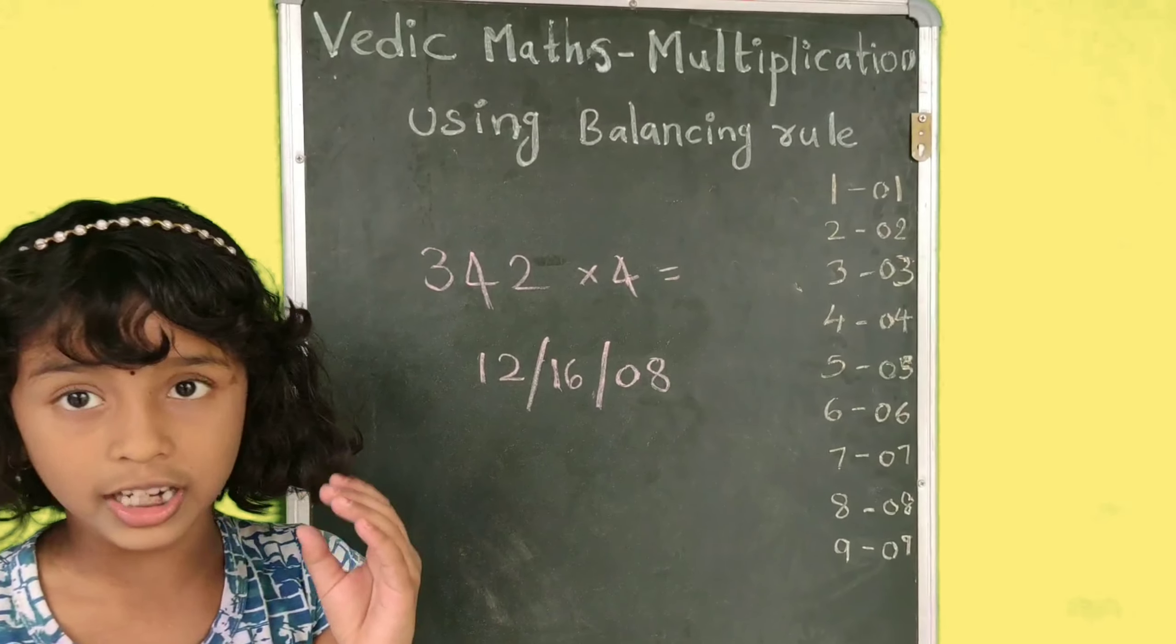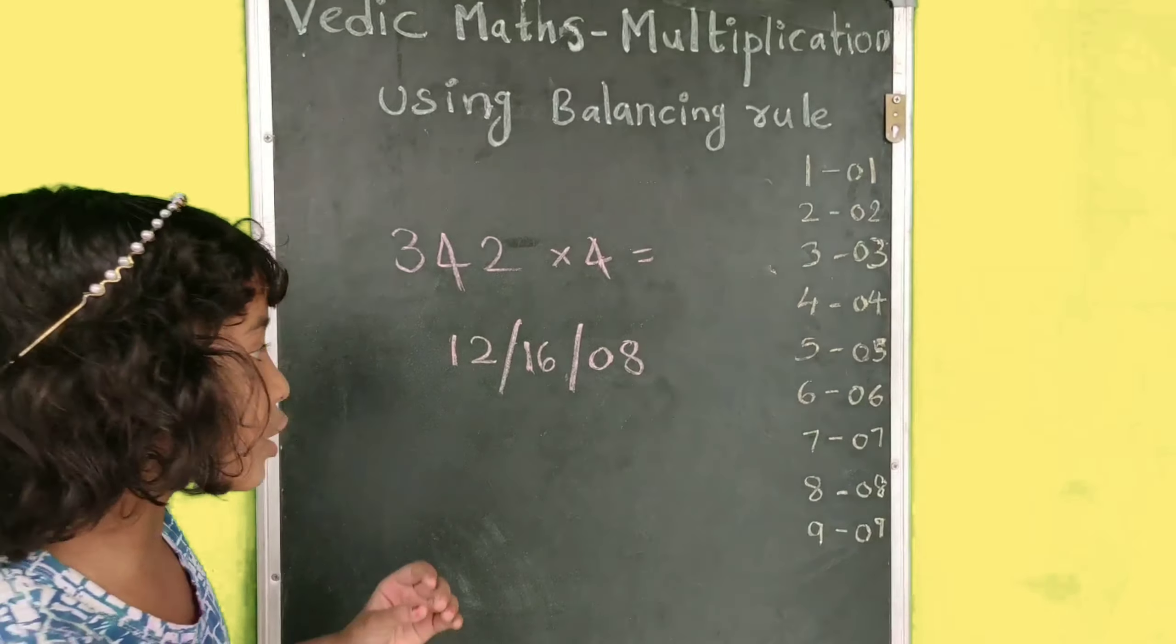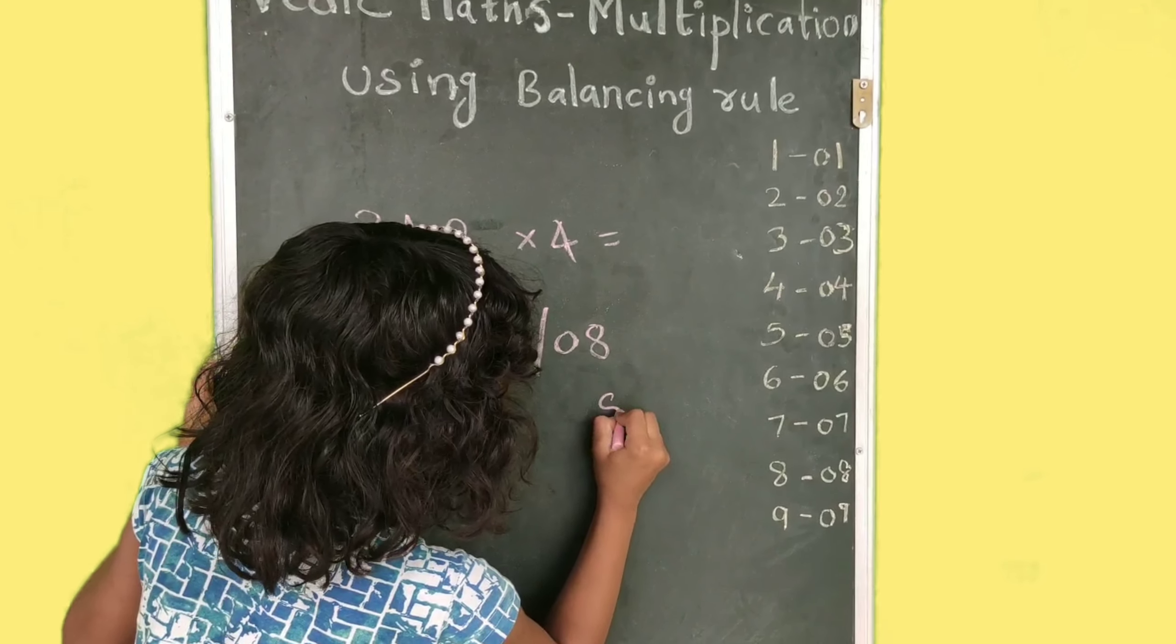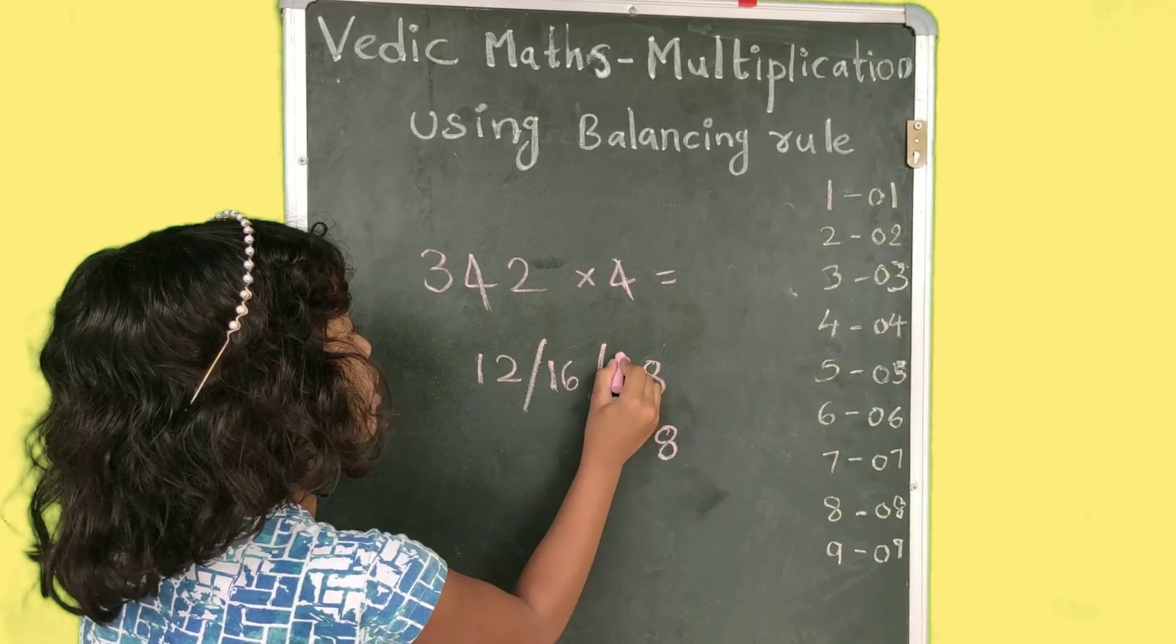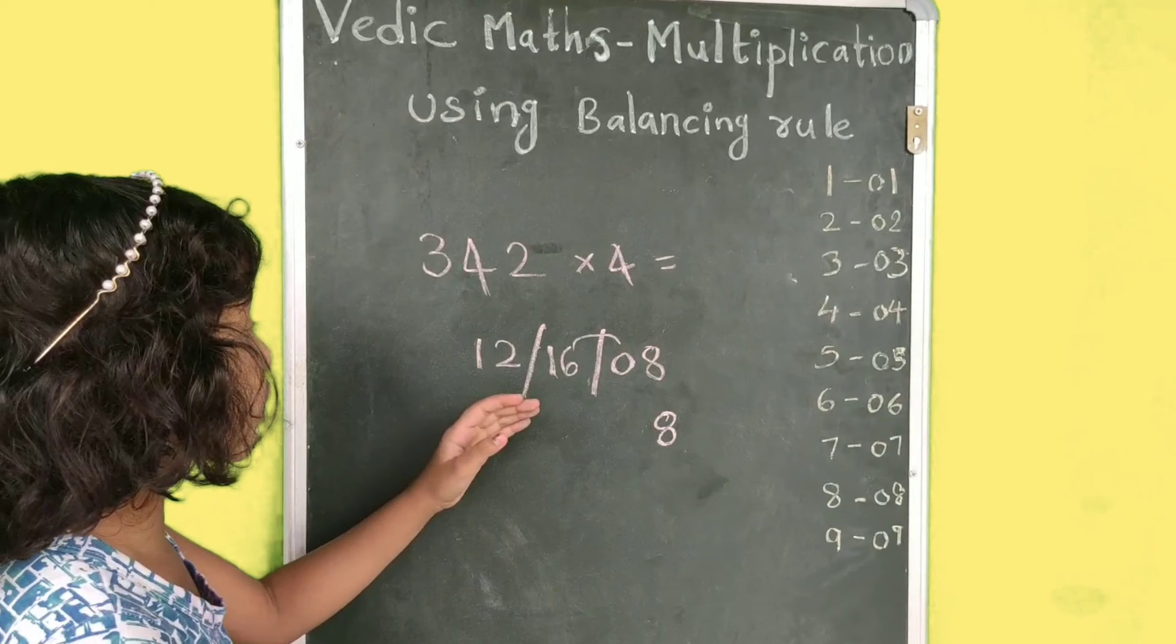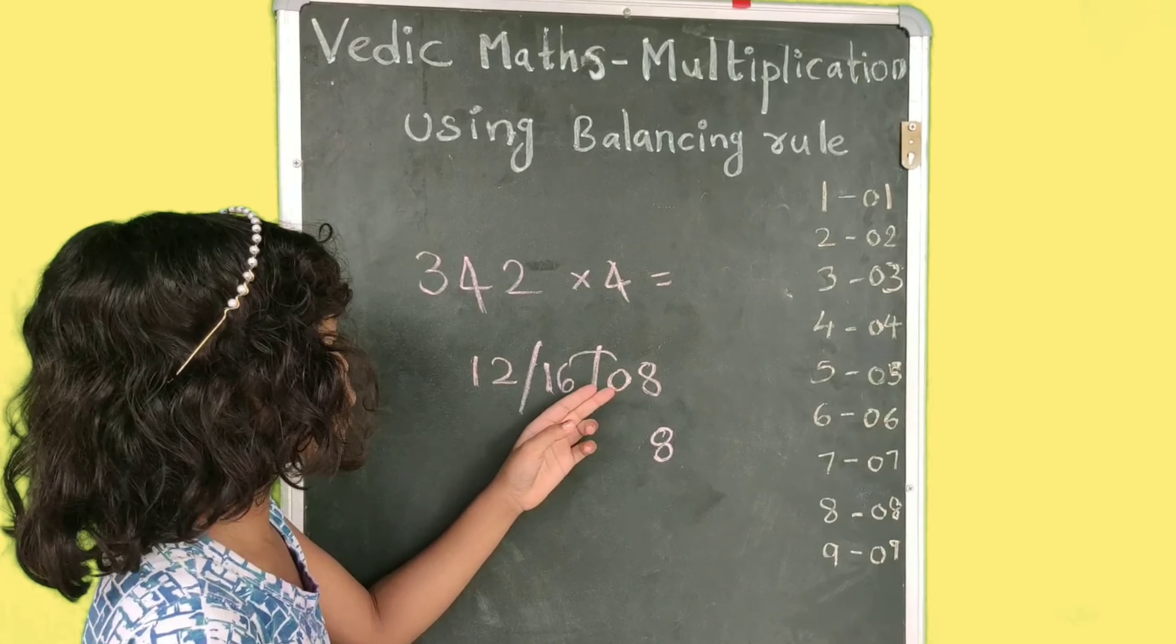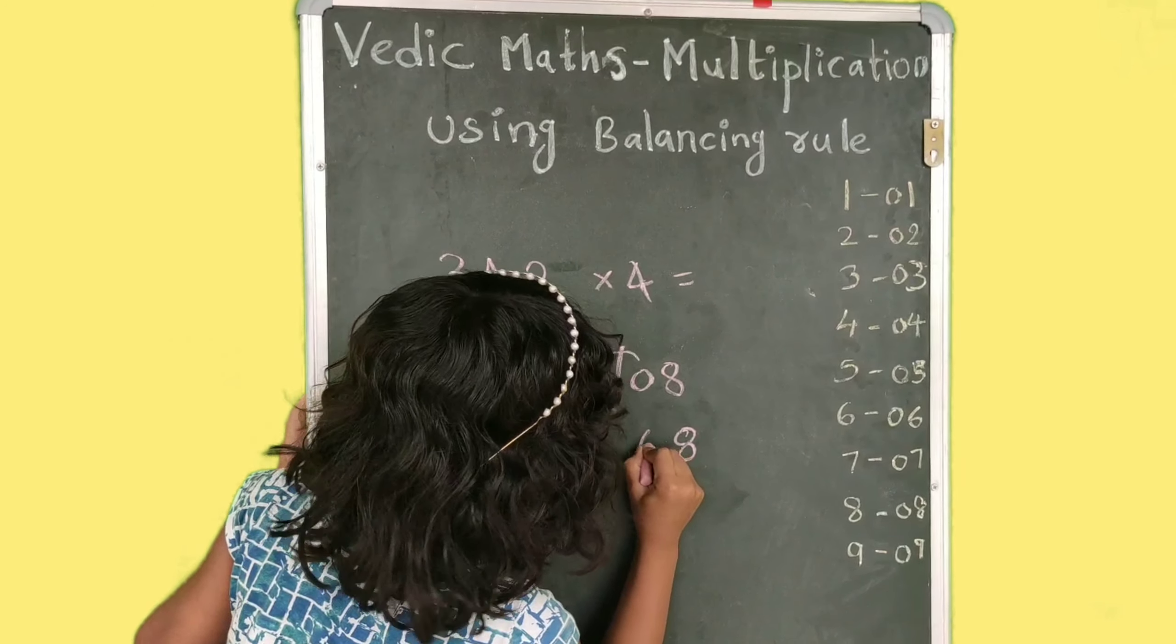Tepor, manam e4 ni e3 ni multiply chedhaan. E8 ki, e8 manam alaagi bese kundhaan. E0 ni e6 ni multiply chedhaan. 0 e6 ni plus chedhaan. 0 plus 6, 6.